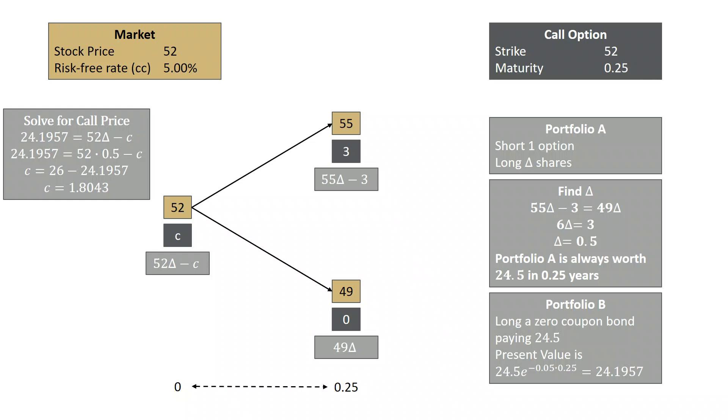What you can see with this particular technique is that this would get really complicated if the binomial tree were a little larger. So we use risk-neutral probabilities to simplify this.